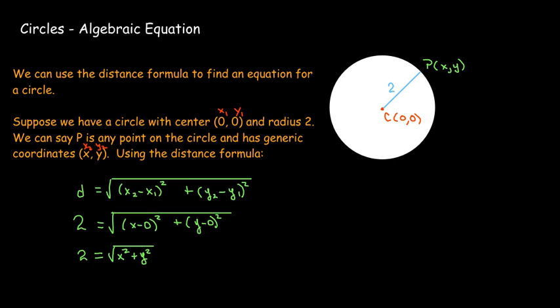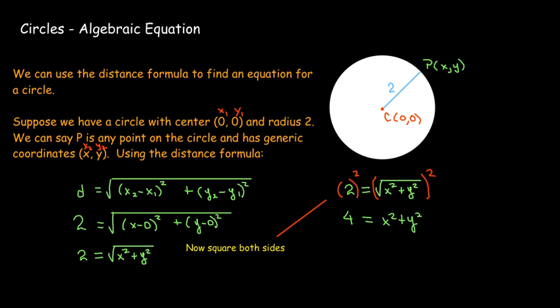To get standard form, we square both sides: 4 equals x squared plus y squared. It's customary to put x squared plus y squared on the left and the radius squared on the right. So the equation is x squared plus y squared equals 4. This is a very specific circle — the center and radius are both given.